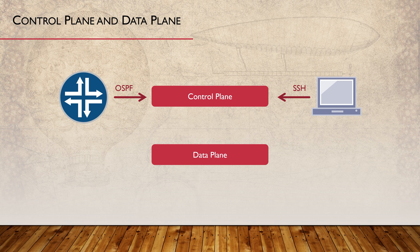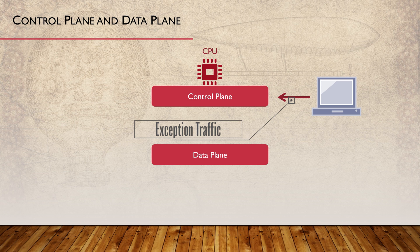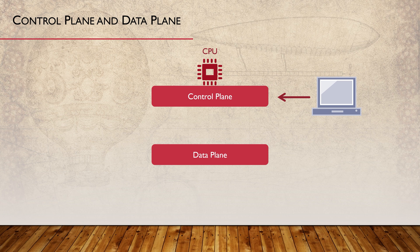Sometimes you will hear the term management plane. This is just referring to the management traffic to or from a device, and is really just a part of the control plane. The device uses its CPU to process control plane traffic. For example, a router may receive OSPF traffic from a neighbor — this is exception traffic. These updates are processed by the router's CPU to determine the best paths to each network and to update the routing table. The data plane, on the other hand, does not use the CPU. Routers and switches will use special hardware to forward the traffic quickly and efficiently.